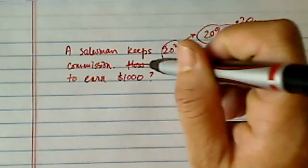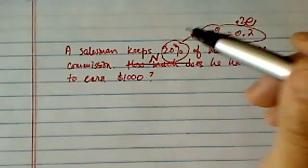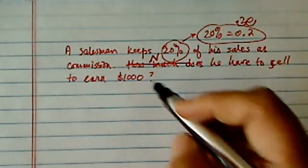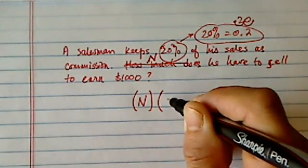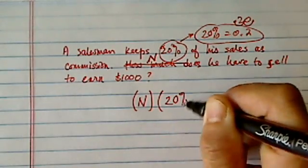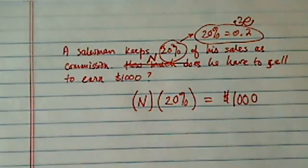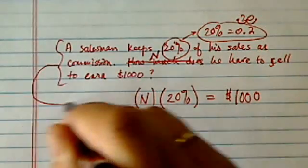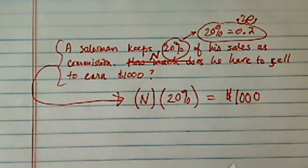So the trick to do this problem is assume you know how much. Let's call it N. He has to sell N dollars to be able to earn $1,000. So basically, if he sells N dollars, and then he keeps 20%, and then overall he's going to have $1,000. So the trick really is grabbing this word, or story, and transform it into a mathematical equation.